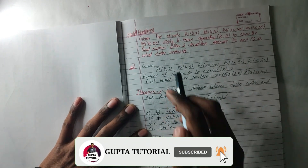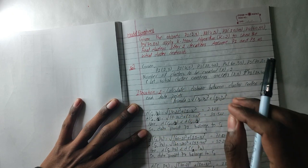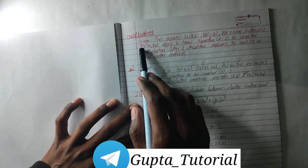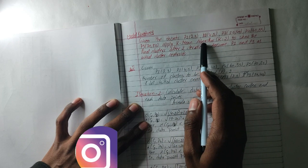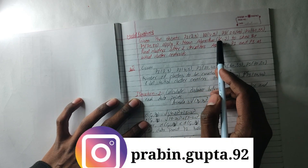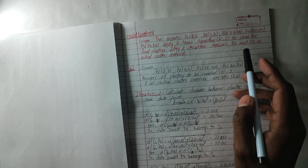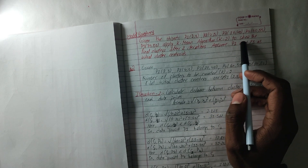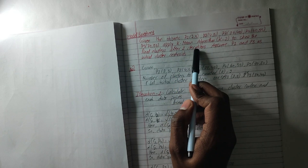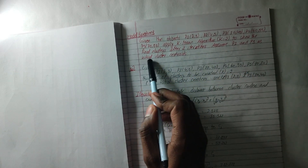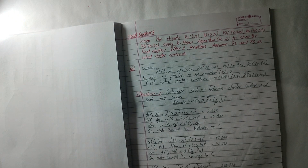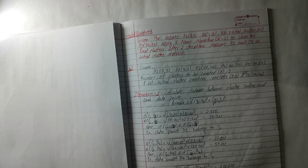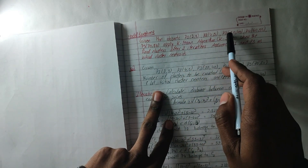The question is about the k-means algorithm for data clustering. The goal is to reach the final cluster after 2 iterations. This uses the k-means algorithm called data clustering, and the answer requires 2 iterations.